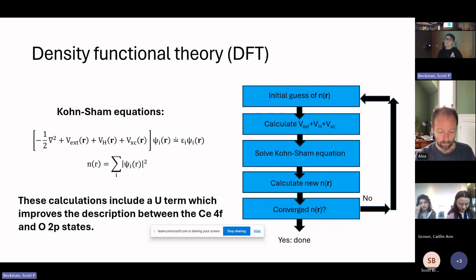But in order to get the charge density, you actually need to solve the Kohn-Sham equations. So it starts by using an initial guess for your charge density, input that to calculate your potential energy, then you can solve your Kohn-Sham equations and calculate your new charge density. If that's converged, you can go on. If not, you reiterate the process using your new charge density. For those who know DFT, for these calculations I have included a plus U term to allow for a better description of the 4f states and the 2p states.